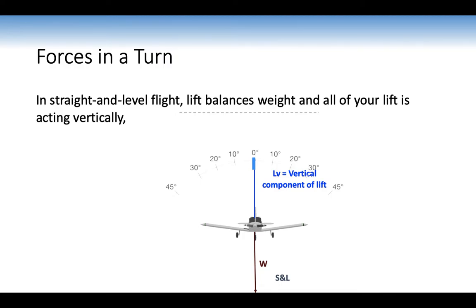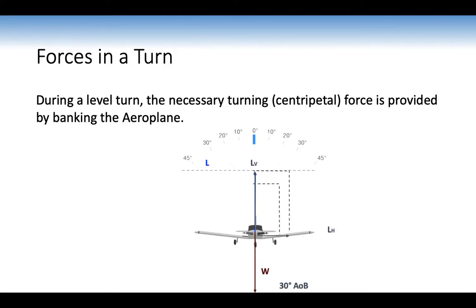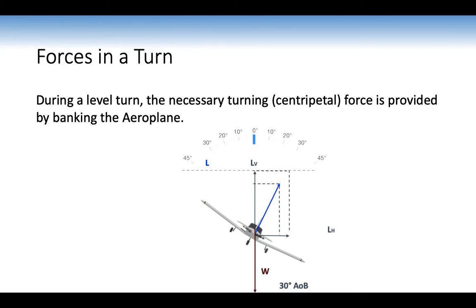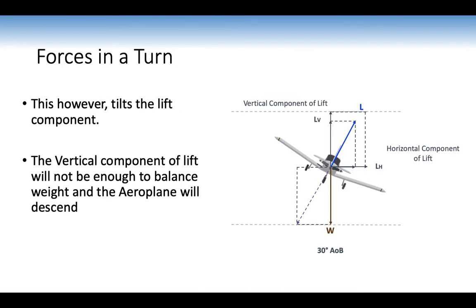Forces in a turn: in straight level flight, lift balances weight and all lift acts vertically. During a level turn, the necessary centripetal force is provided by banking the aeroplane using the ailerons. At, say, 30 degrees of bank, lift acts diagonally. The vertical component of lift will not be enough to balance weight, so the aeroplane will descend — it's not that lift decreases, but that it's not enough to maintain level flight.